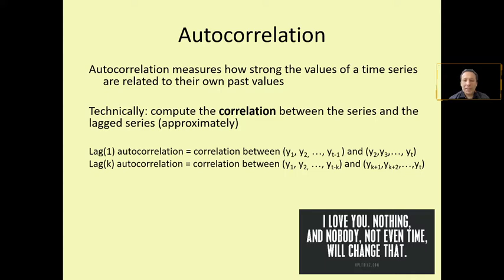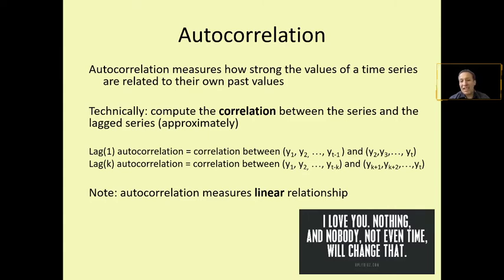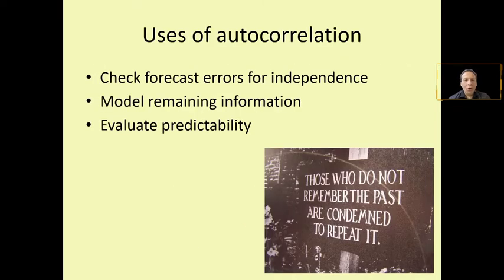That is the concept of autocorrelation — it measures a linear relationship between observations at different time points. The autocorrelation can sometimes be very strong.